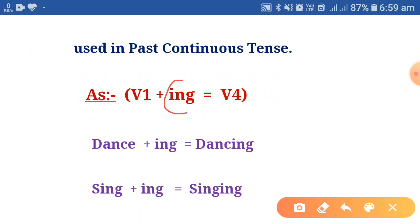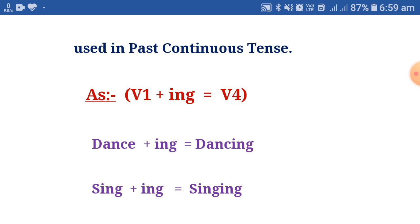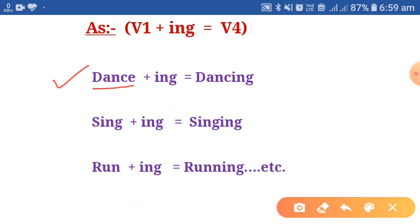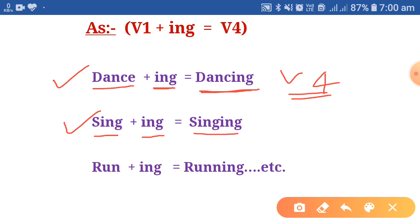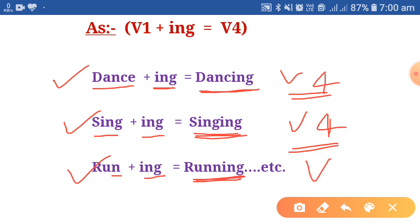The fourth form is formed when -ing is added to the first form of the verb. For example: dance plus ing gives dancing — that is the fourth form. Sing plus ing gives singing — singing is the fourth form. Run plus ing gives running — running is the fourth form of the verb.